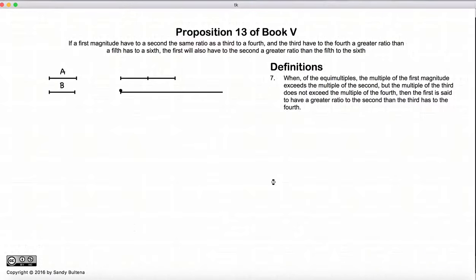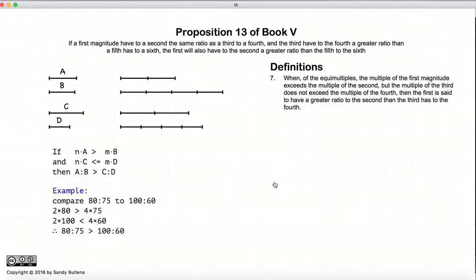Before we begin, I'd like to recap Definition 7. Definition 7 defines what it means for one ratio to be larger than another. So if we have two ratios made up of magnitudes a, b, c, and d.